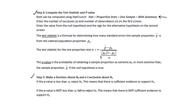Remember that the more standard deviations away, the more unlikely that event is to occur. The p-value is the probability of obtaining a sample proportion as extreme as, or more extreme than, the one found in our sample, if the null hypothesis was true. A low p-value indicates it's unlikely to get this sample if the null hypothesis was true, so we throw out our assumption that it was true.